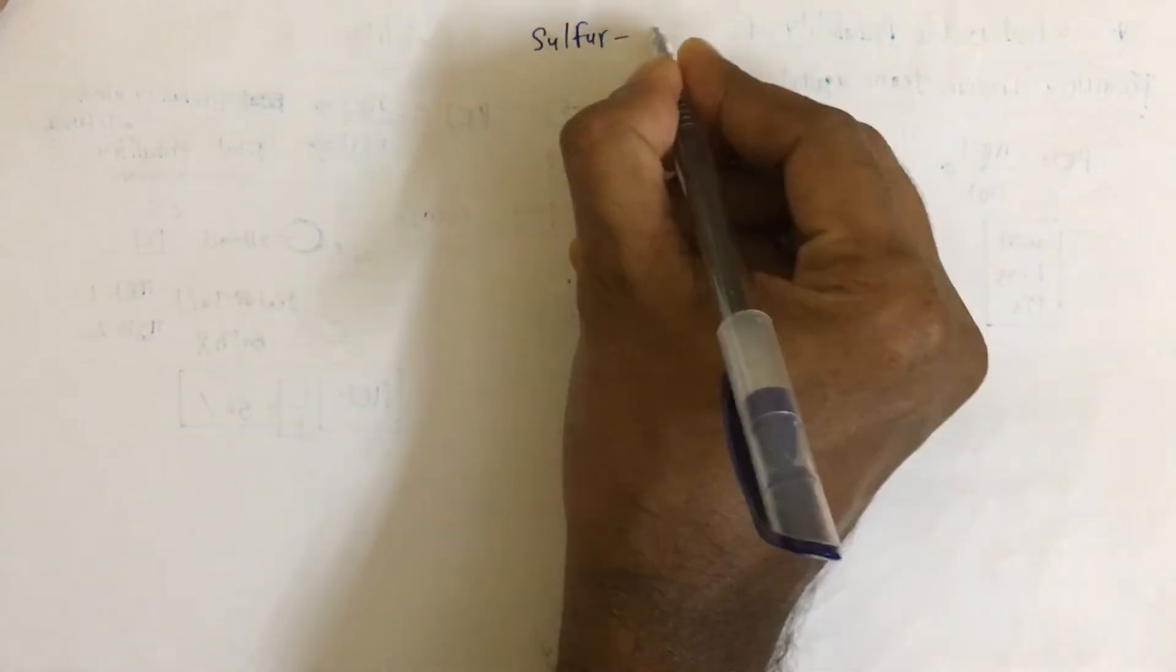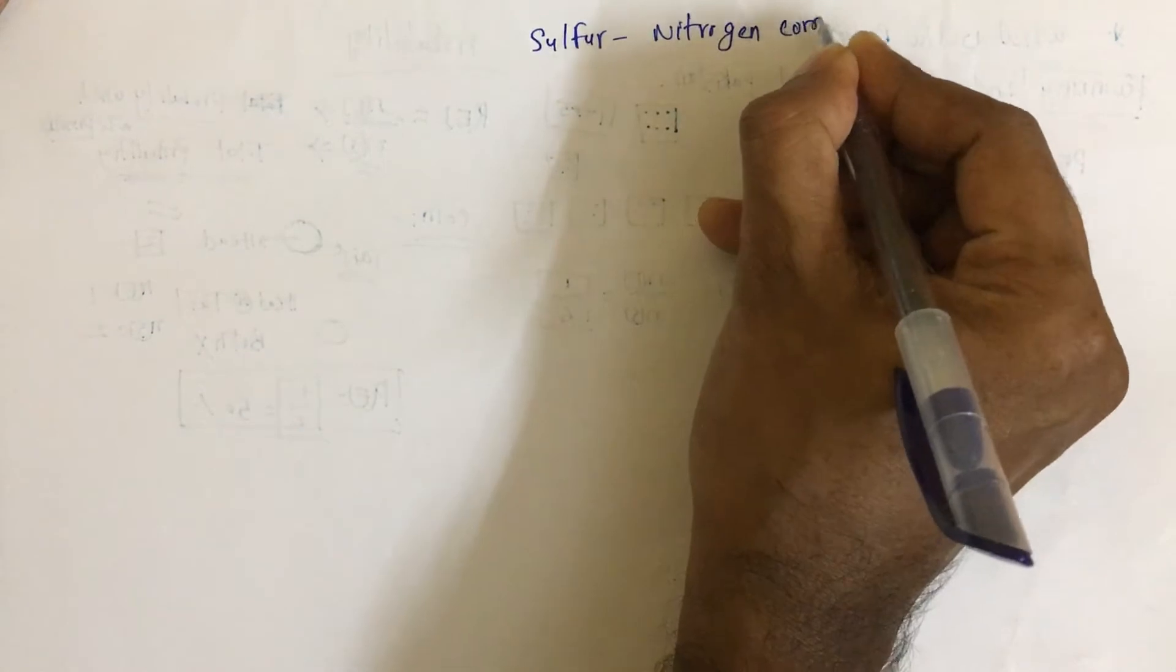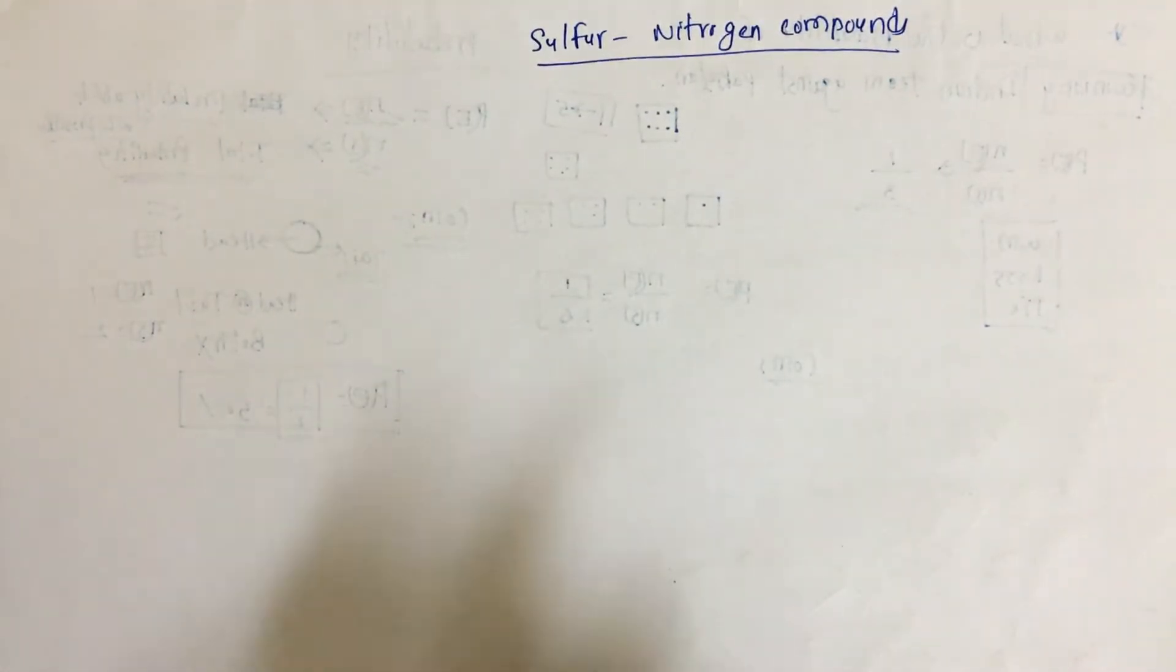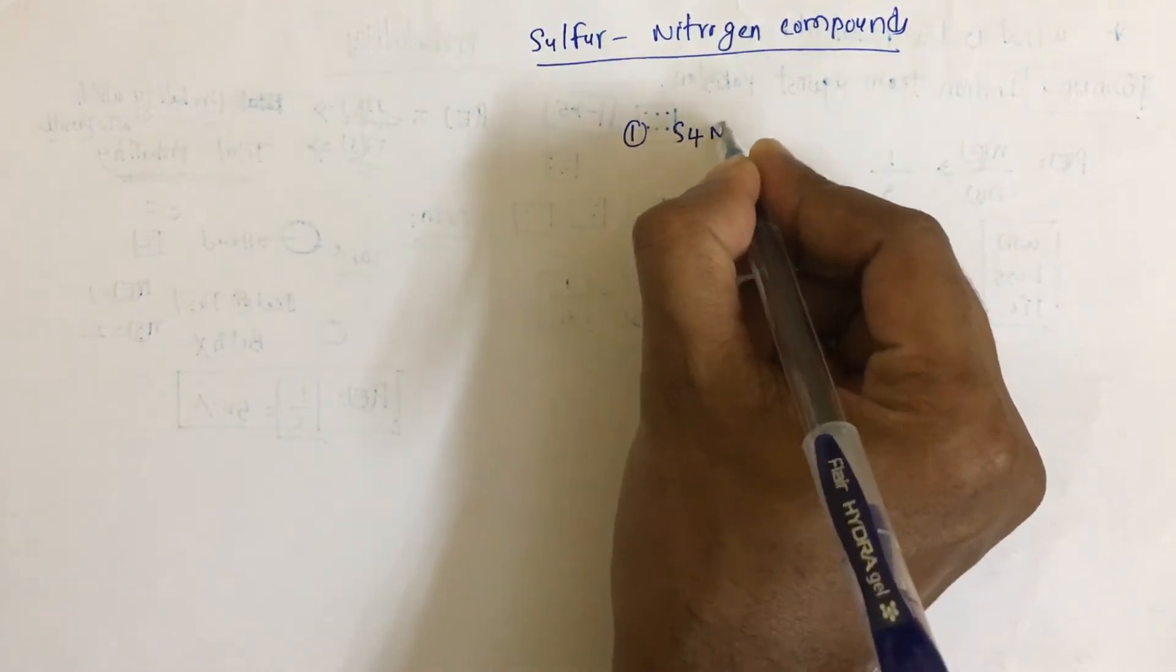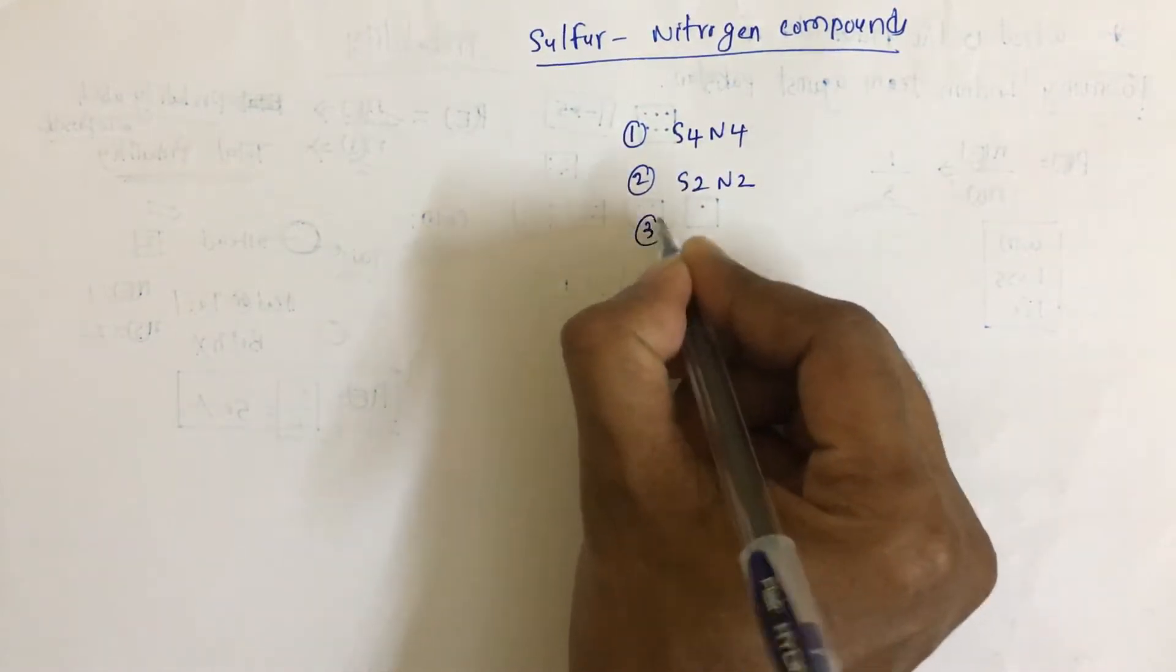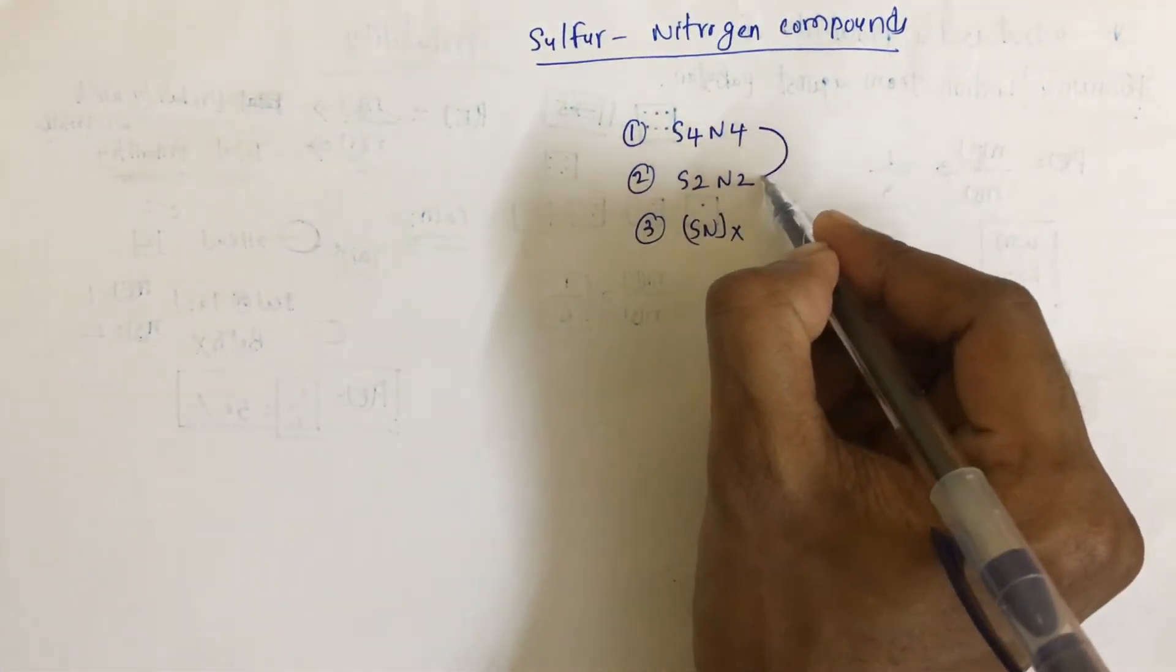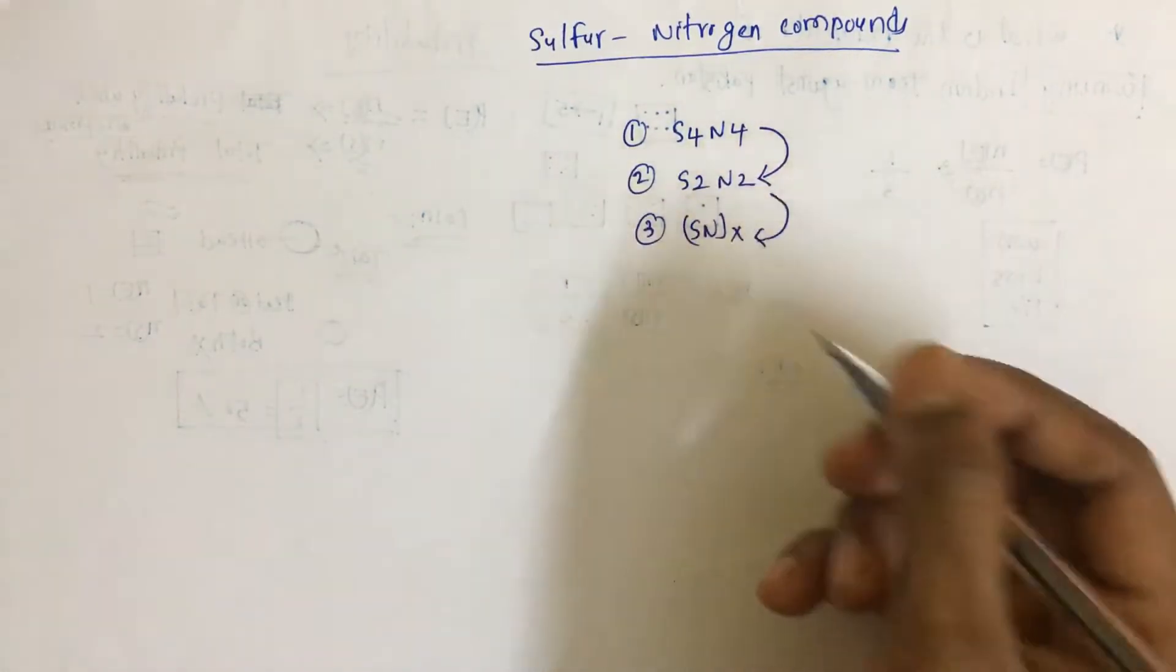Next topic is sulfur-nitrogen compounds. This is a very simple concept. Many questions are asked from this topic. Here we have three sulfur-nitrogen compounds: S4N4, S2N2, and SNx. This is very easy to remember. S2N2 can be prepared from S4N4, and SNx will be prepared from S2N2.